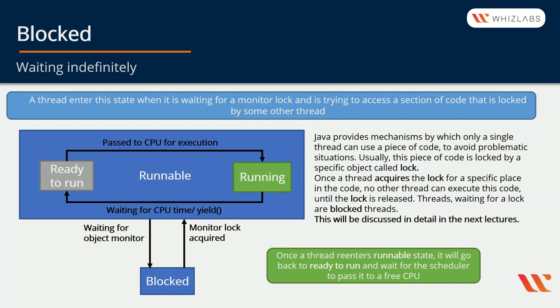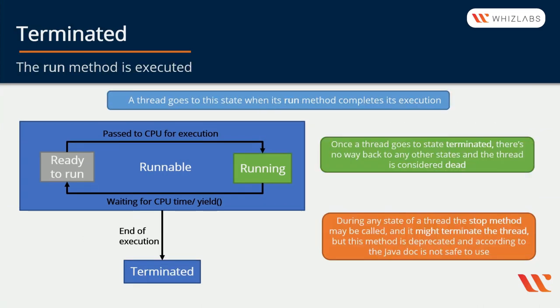The thread goes to Runnable and is waiting for CPU time once unblocked. As an end, we have the Terminated state. A thread goes to this state when the run method of the thread completes its execution. Once a thread goes to the Terminated state, there is no way back to any other states and the thread is considered dead.